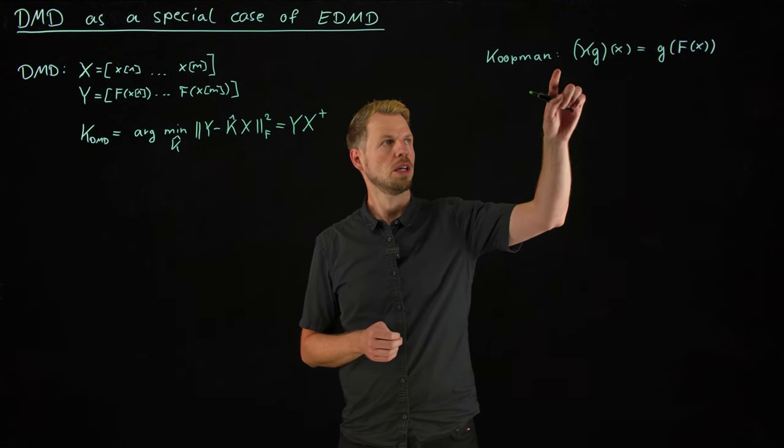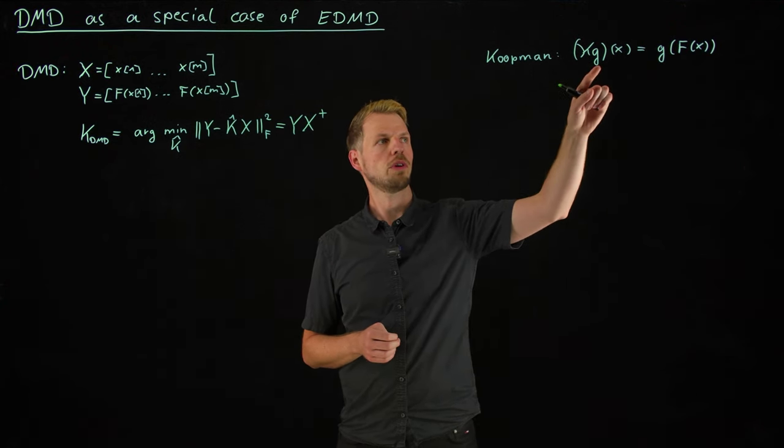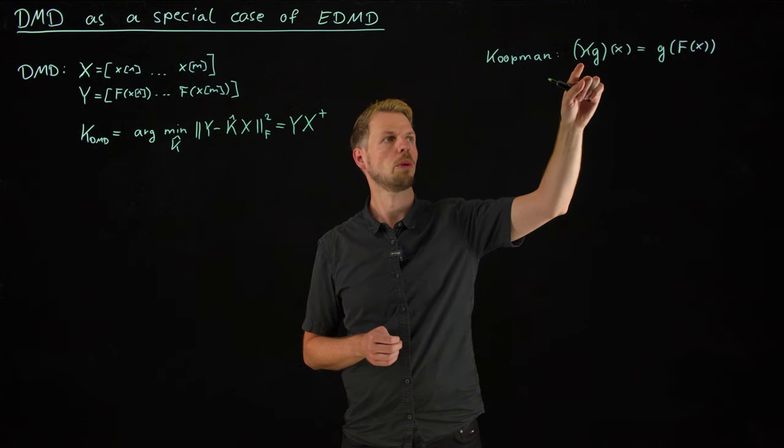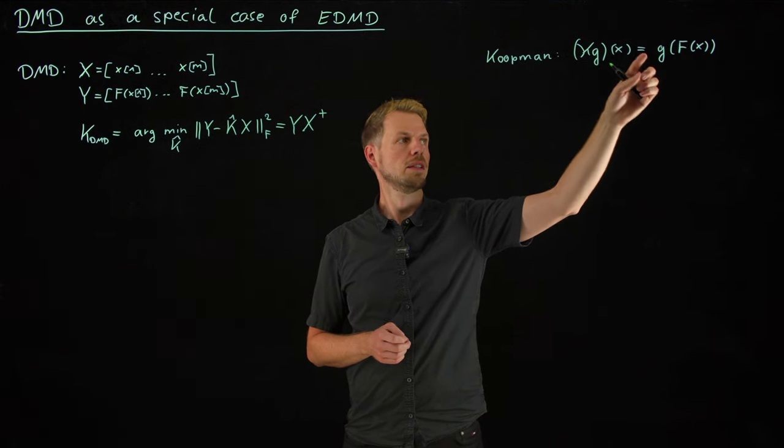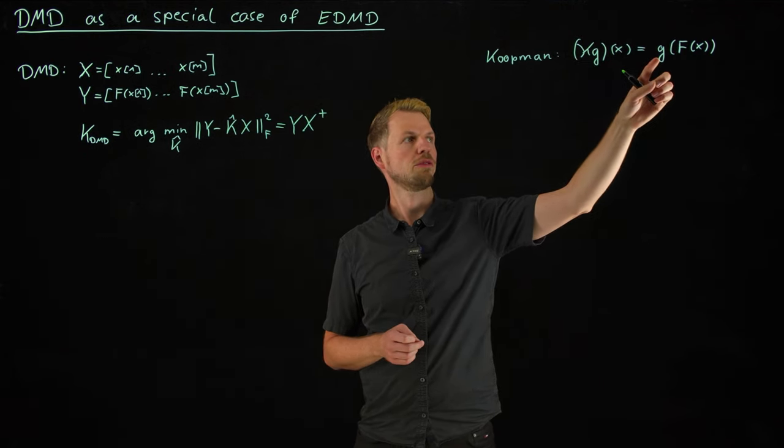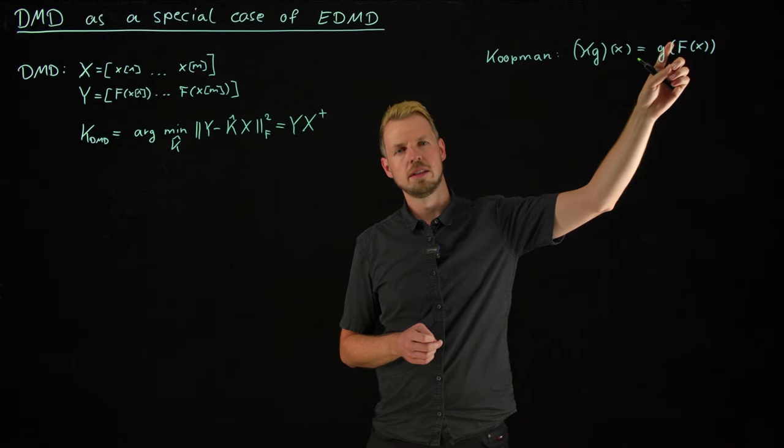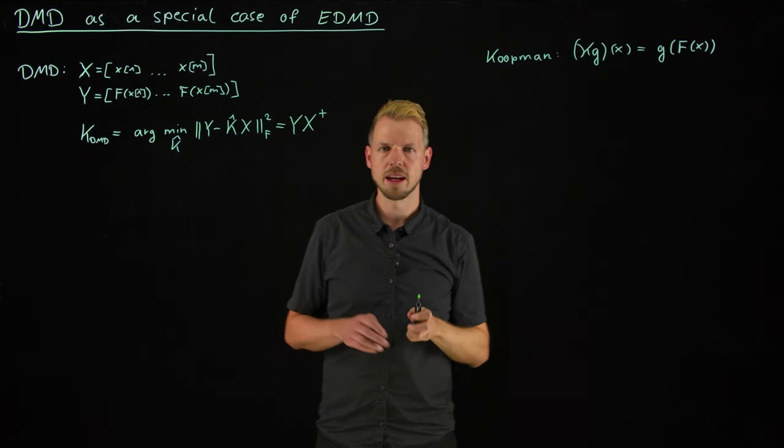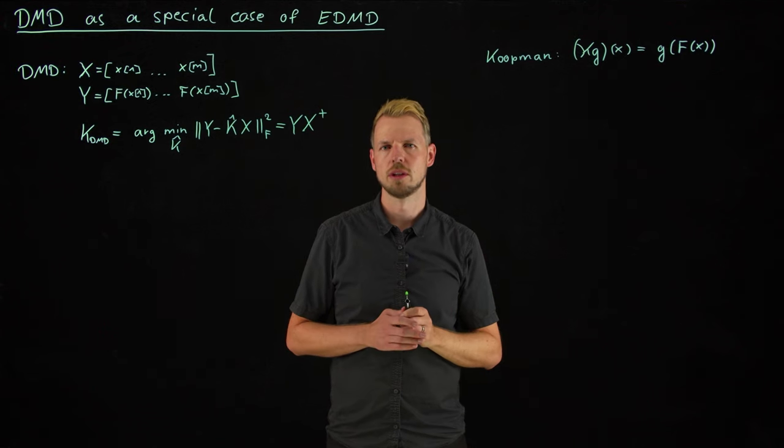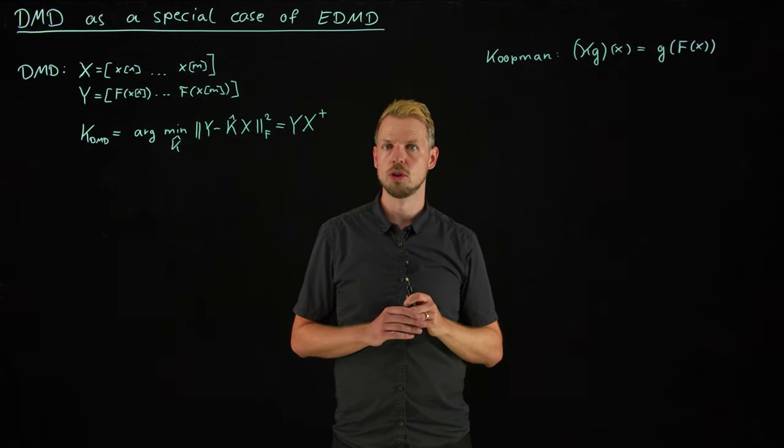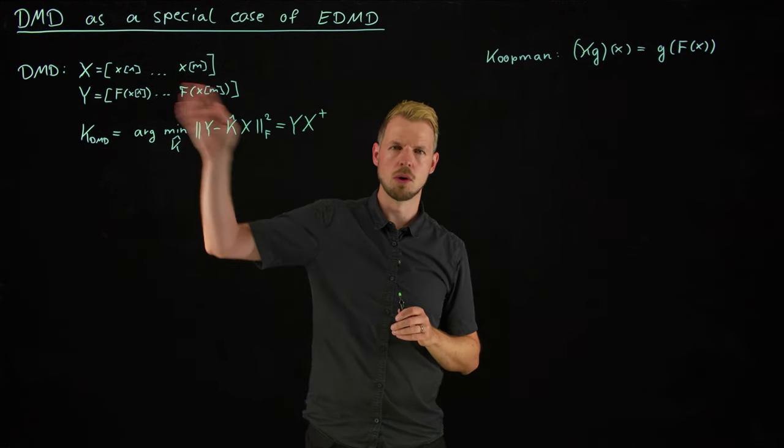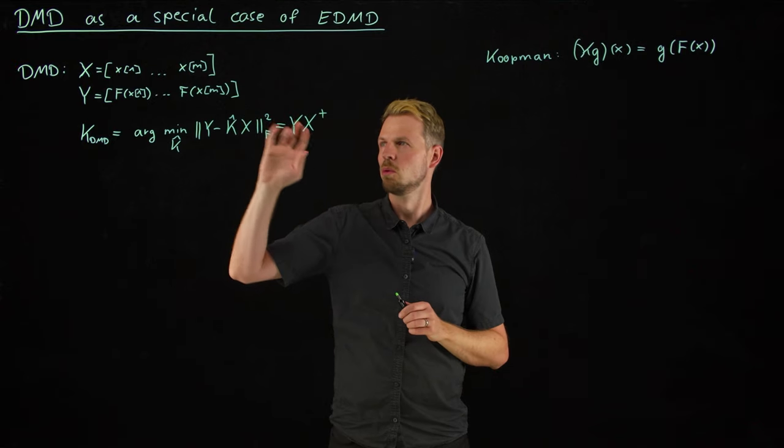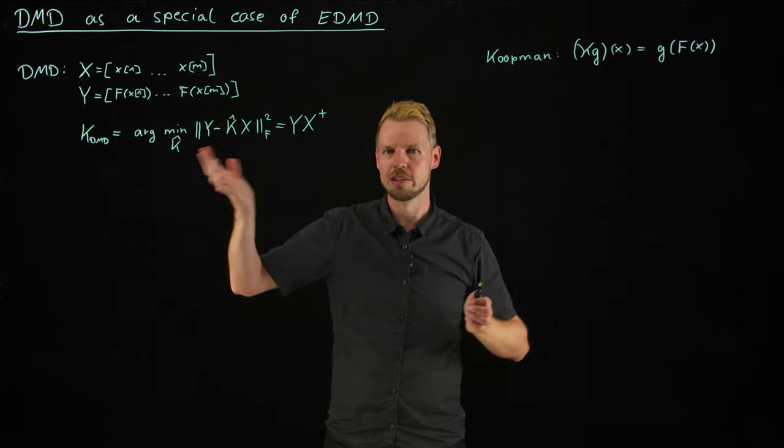Okay, so this is our Koopman operator definition for an observable function g. The Koopman operator acting on this function is the same as evaluating the function at the next time step under the flow f. And something that is very popular in the dynamical systems community in recent years is the dynamic mode decomposition.